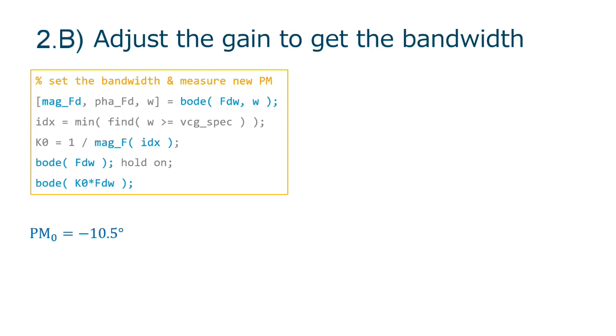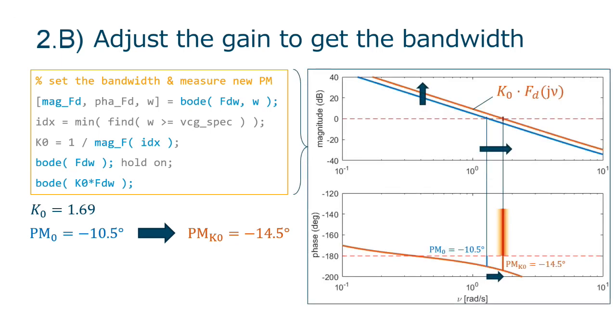We start by identifying the current value of the gain at nu cg and multiply by its inverse value. The result, k0 is equal to 1.69, has an impact on the current phase margin going worse from minus 10.5 degrees to minus 14.5 degrees.